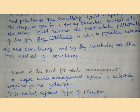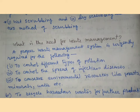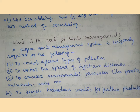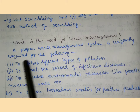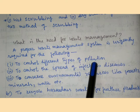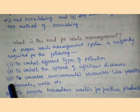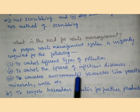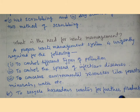What is the need for waste management? A proper waste management system is urgently required: (1) to control different types of pollution, (2) to control the spread of infectious diseases, (3) to conserve environmental resources like forests, minerals, and water, and (4) to recycle hazardous waste for further production.